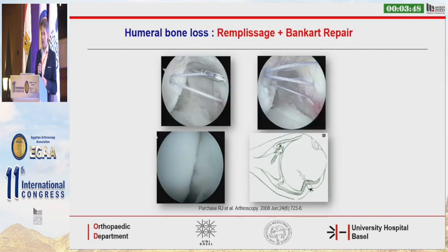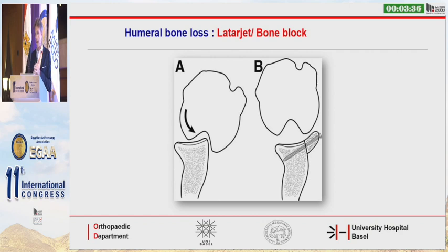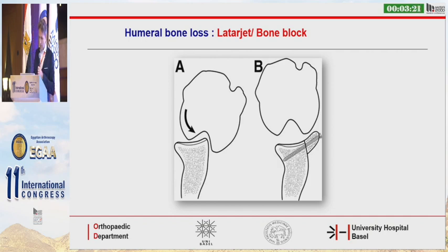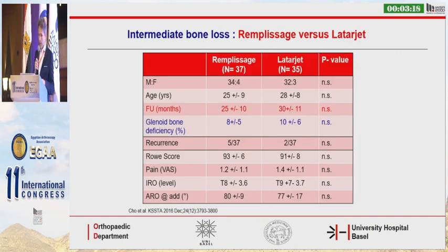We address bone loss at the humeral side — we know we can do a remplissage technique to externalize an engaging Hill-Sachs lesion. At the glenoid surface, we can convert an off-track lesion into an on-track lesion. Regarding the best procedure for bone loss of about 10% at the glenoid, both strategies might work. A study comparing 37 patients undergoing remplissage with 35 undergoing a Latarjet procedure showed no significant difference in outcomes at two to three years in patients with mild bony deficiency.